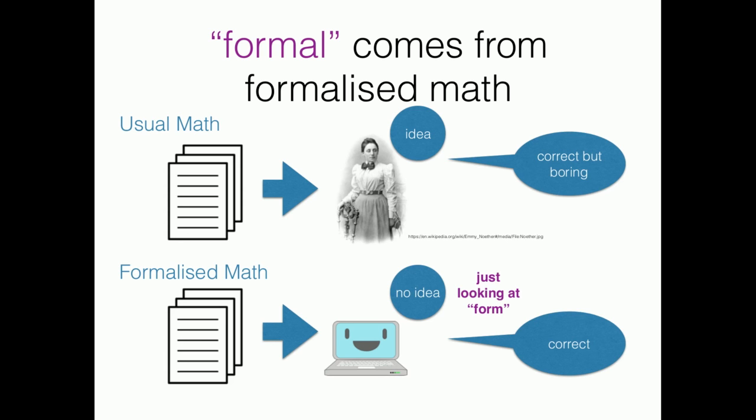In formalized mathematics, something is written in a computer file and the machine reads it. The machine has no idea, I guess, but it says correct by just looking at the form of what's written in it. And this form is what this formalized mathematics is about.